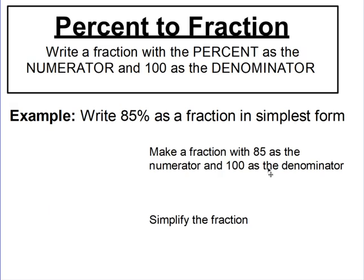Now we're going to change percents to fractions. A percent means out of 100. So if a percent means out of 100, you can make a fraction out of a percent by putting the number over 100. If you're given 85% and asked to write it as a fraction, you can just write it as 85 over 100. Your teacher will ask you to simplify those fractions, but as far as writing a fraction out of a percent, you just put the number over 100.